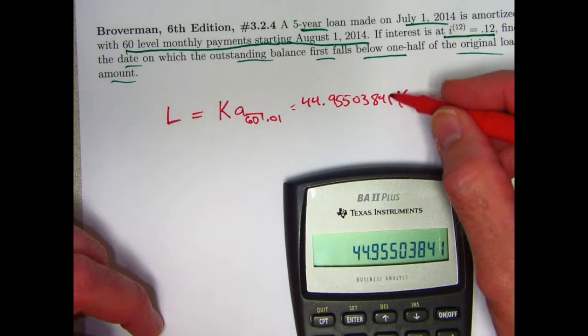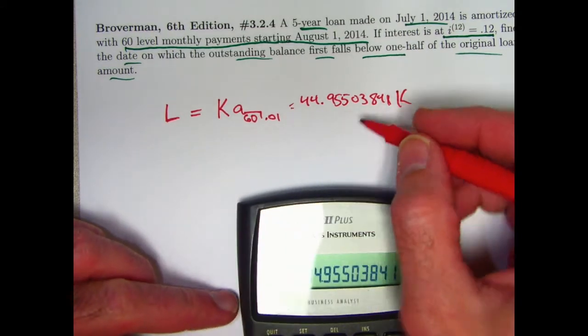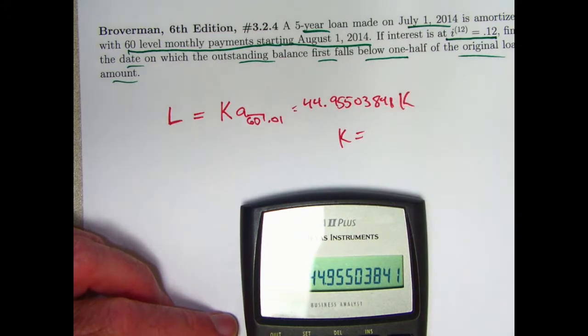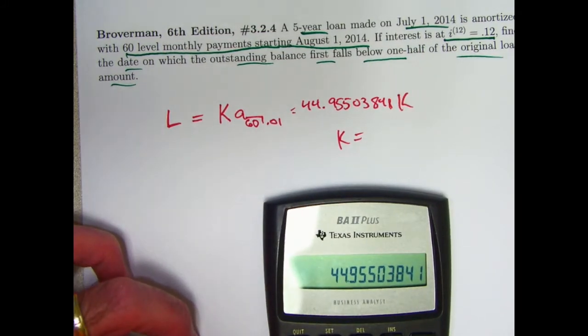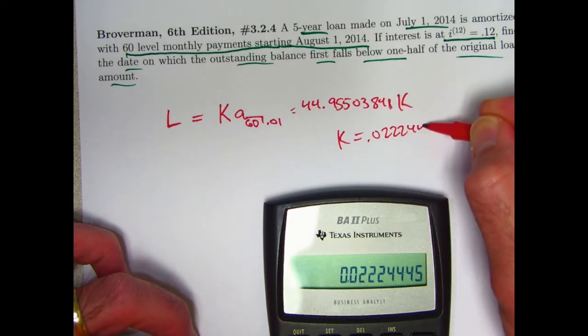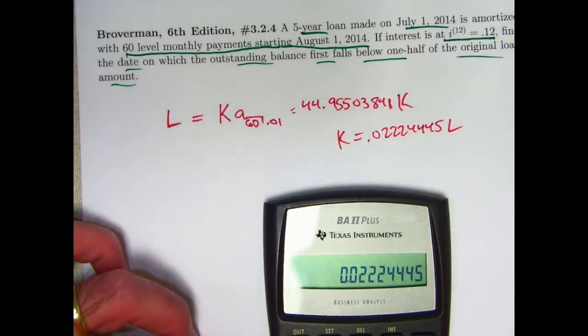K times that is the loan amount. Another way of saying that is that K is L times the reciprocal of this thing. Take its reciprocal. K is 0.022244445 times L.